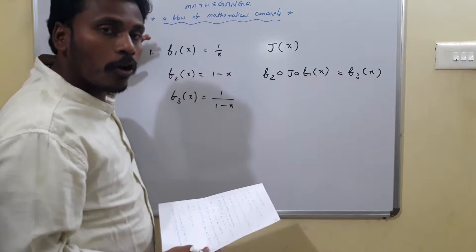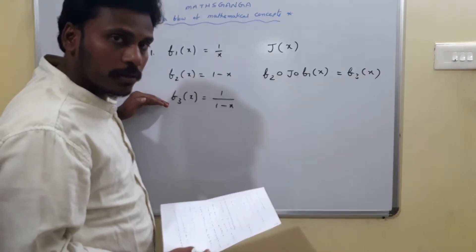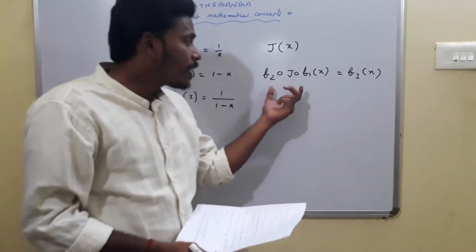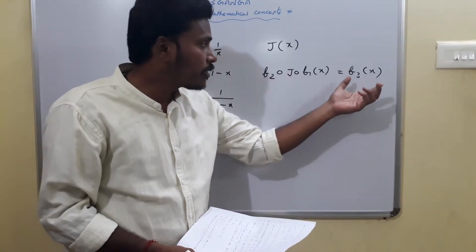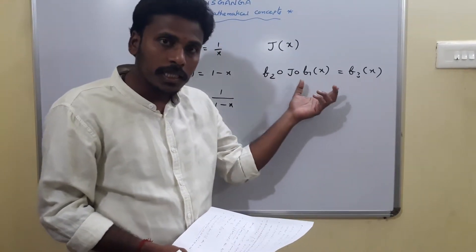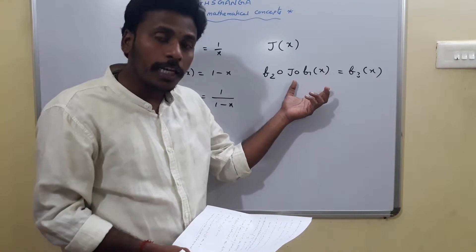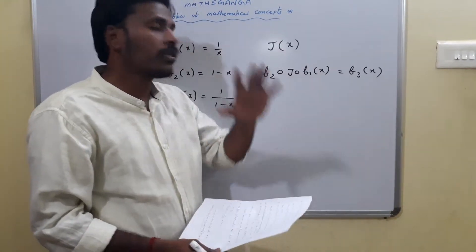We have three functions F1 of x, F2 of x, and F3 of x. The composition of these three, F2 circle J circle F1, is equal to F3. In this condition, we need to identify the function J of x.